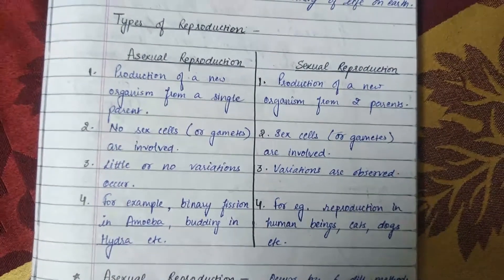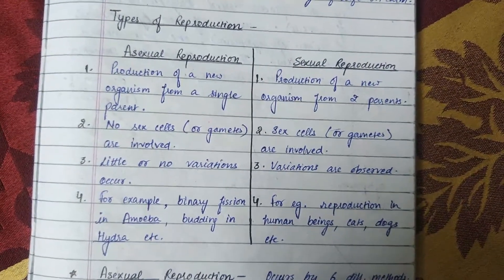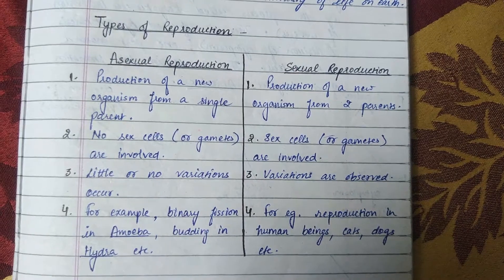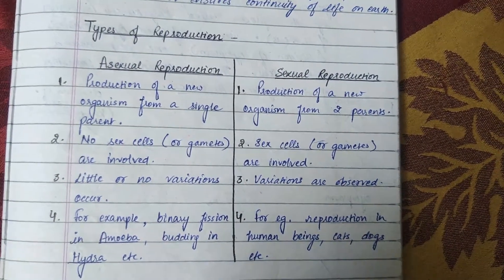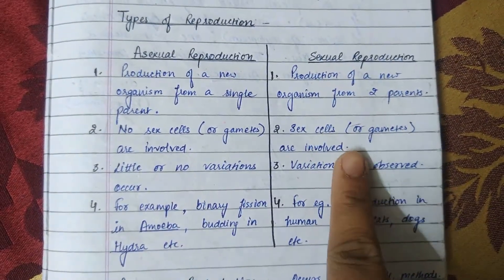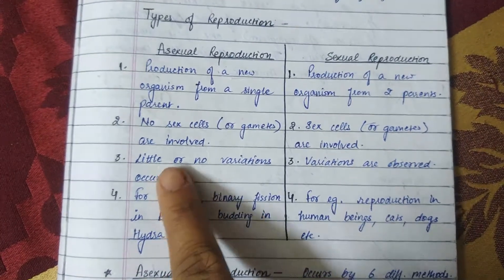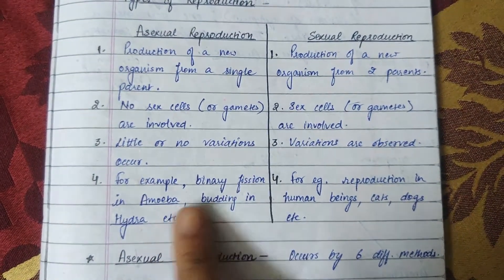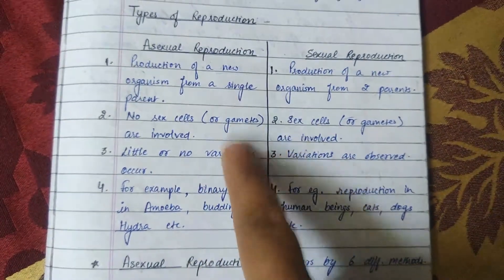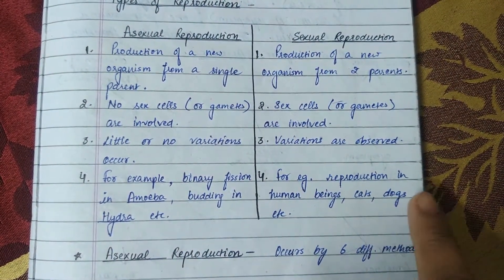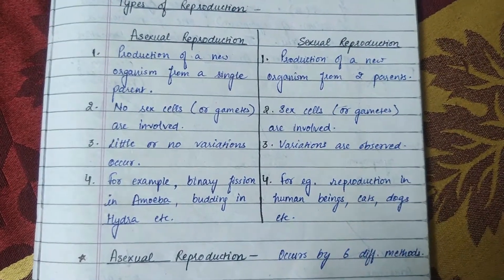Reproduction is of two types: asexual and sexual. In asexual reproduction, a new organism is produced from a single parent, and no gametes or sex cells are involved. Little or no variations occur. Examples include binary fission in amoeba and budding in hydra. In sexual reproduction, two parents are involved, sex cells or gametes are involved, and variations are observed. Examples include reproduction in human beings, cats, dogs, etc.